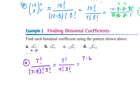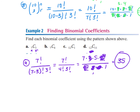In the numerator I have 7 times 6 times 5, stopping at 4 because there's a 4 factorial on the bottom, then 3 times 2 times 1. The 4s cancel out. 3 goes into 3 once, 3 goes into 6 twice. So 7 times 2 times 5 — or you can multiply across on top and divide at the end. Either way, 7 times 5 is 35.